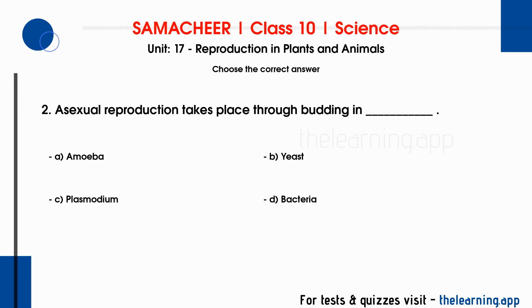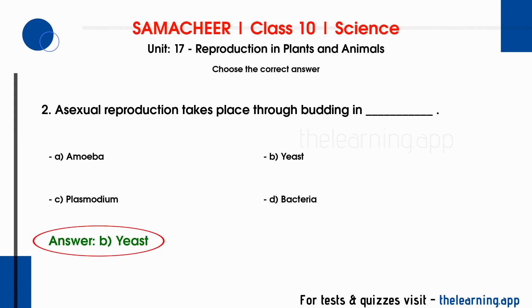Second question: asexual reproduction takes place through budding in DASH. The options are A. Amoeba, B. Yeast, C. Plasmodium, D. Bacteria. The correct answer is option B, Yeast.